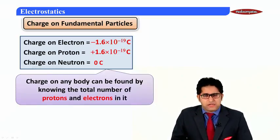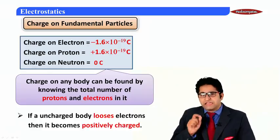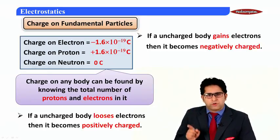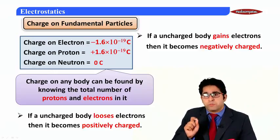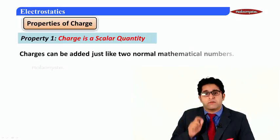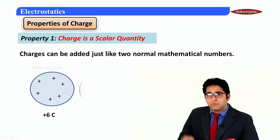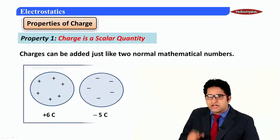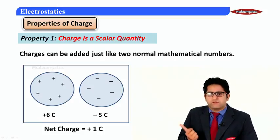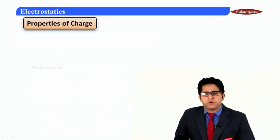If we know the total number of protons and electrons in a body, we can calculate its charge. If an uncharged body loses electrons, it becomes positively charged; if it gains electrons, it becomes negatively charged. The first property of charge is that it is a scalar quantity — charges are added like normal mathematical numbers. For example, +6 coulomb and −5 coulomb give a net charge of +1 coulomb.